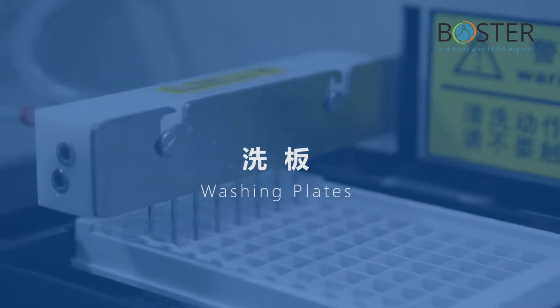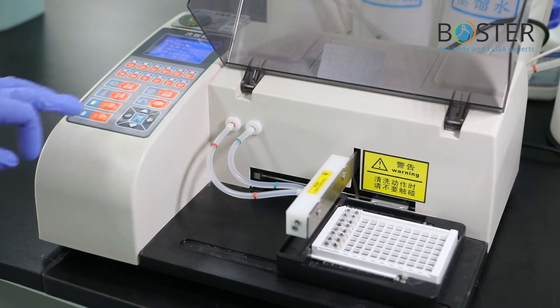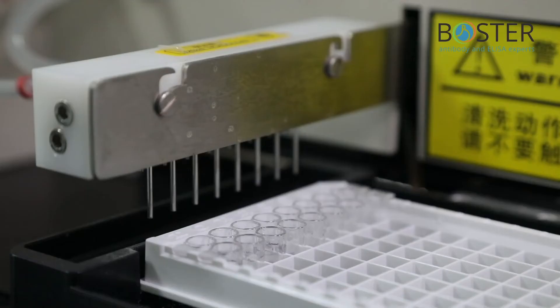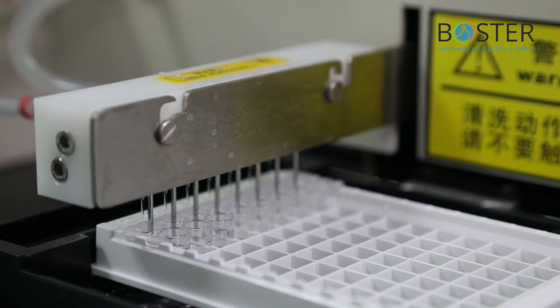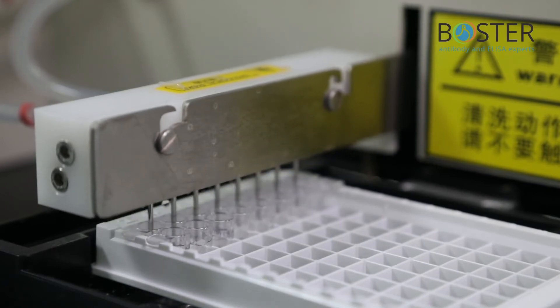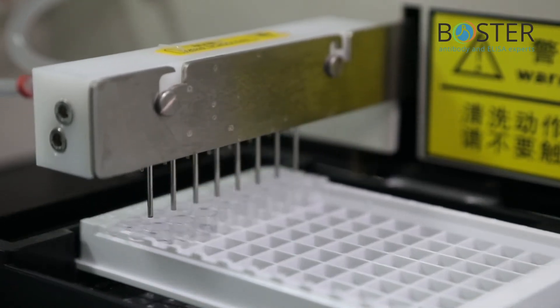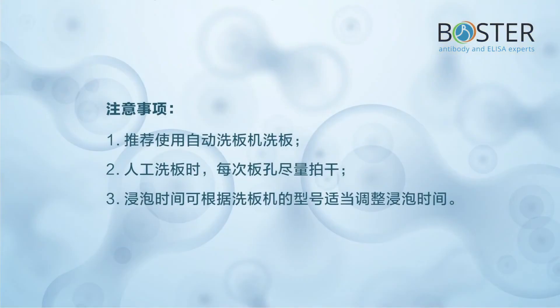Step 3: Wash the board. After the reaction, wash three times with 1X washing solution. Add 300 µL of washing buffer to each well and soak for one minute each time. Precautions: 1. It is recommended to use an automatic plate washer to wash the plate. 2. When washing the plate manually, try to pat the plate as dry as possible. 3. Adjust the soaking time according to the model of the plate washer.